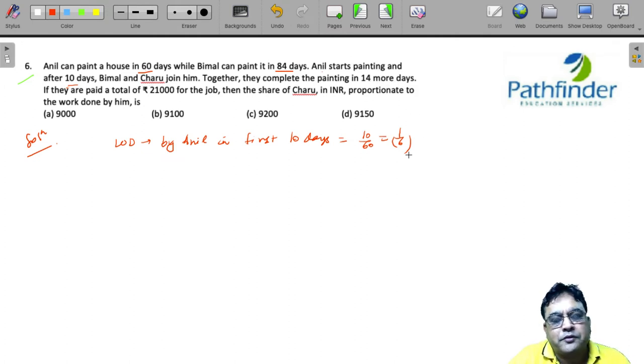So, after 1/6th of the work has happened, they have worked for another 14 days. Who all? Anil, Bimal and Charu. And obviously, together in the remaining 14 days, they would have completed 5/6th of the work because 1/6th of the work is already done by Anil.